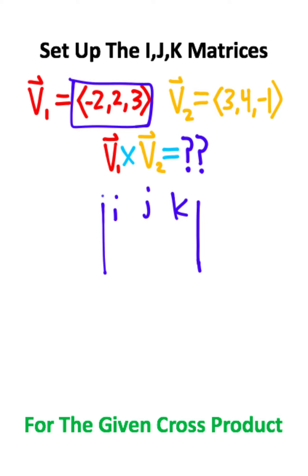So I'm going to start by taking vector 1, and I'm going to put it in the second row of this matrix. And now I'm going to take vector 2, and I'm going to put it in the third row.